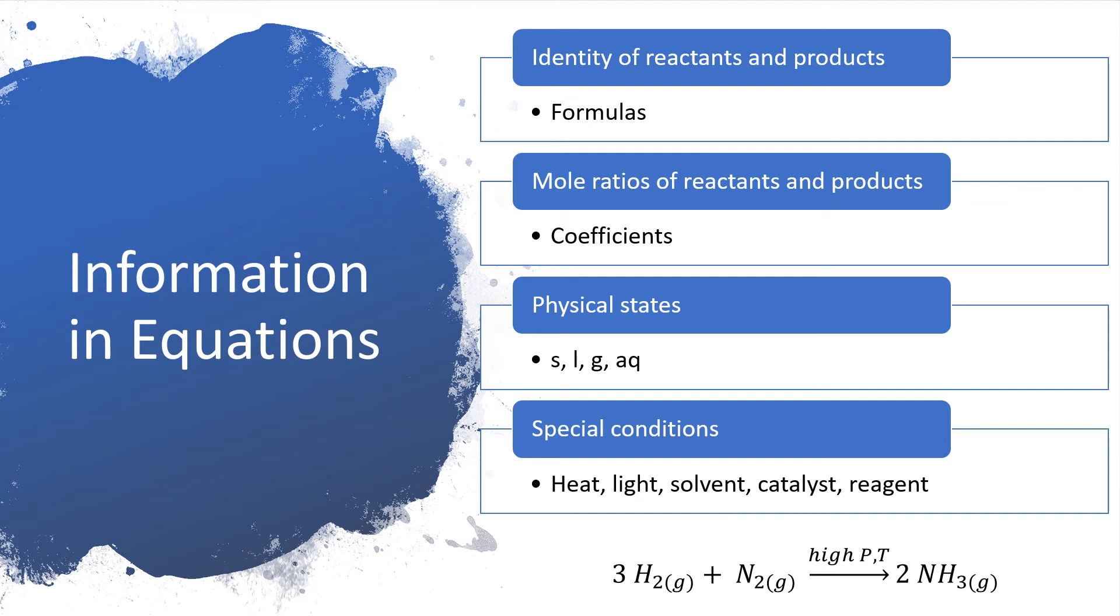Frequently, chemical equations also contain information about the physical states. If the chemical is a solid, a liquid, a gas, or is it dissolved up in water, which we call an aqueous solution. Additionally, above and below the arrow, we can write additional information. Is heat required? Does it have to be done at a particular temperature or a particular pressure? Do you have to illuminate it with some kind of light, like ultraviolet light, to get it started? Is there one particular solvent that you need to use? Do you add a catalyst? Is there some other special reagent that needs to be added? So all of that type of information can also be crammed in either above or below the arrow itself.